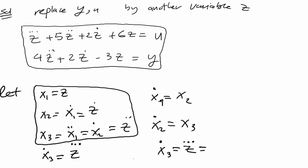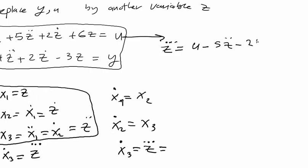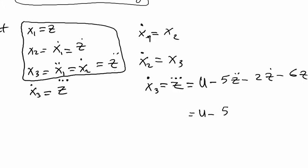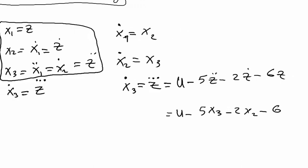From this first equation, we can find x3 dot will equal u minus 5z double dot minus 2z dot minus 6z, which equals u minus 5x3 minus 2x2 minus 6x1.